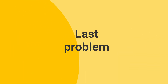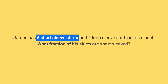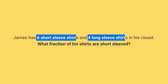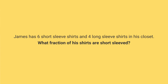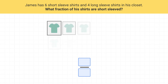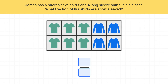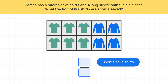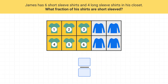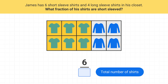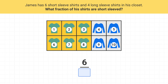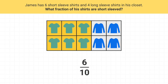Here's your last problem for this video. James has six short-sleeved shirts and four long-sleeved shirts in his closet. What fraction of his shirts are short-sleeved? We can imagine James's six short-sleeved shirts and four long-sleeved shirts. We want to know the fraction of short-sleeved shirts, so the numerator will be the number of short-sleeved shirts he has. There are six short-sleeved shirts, so our numerator is six. Next, the denominator is the total number of shirts, which we can see is 10. So six-tenths of James's shirts are short-sleeved.